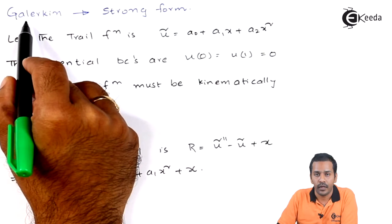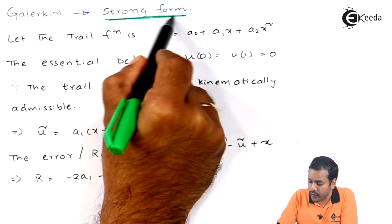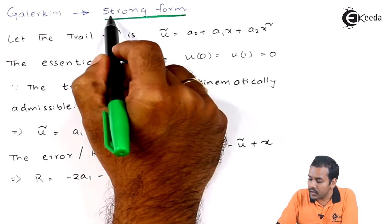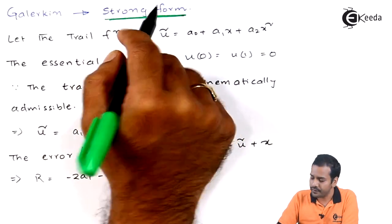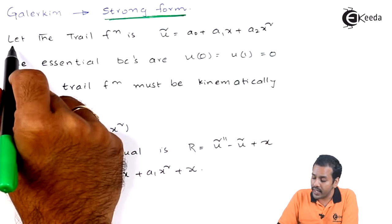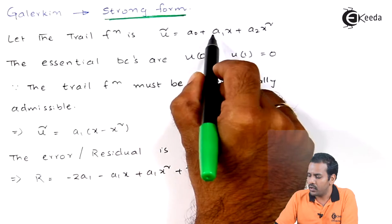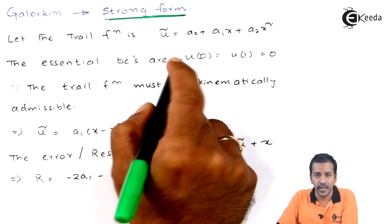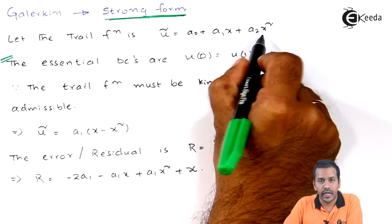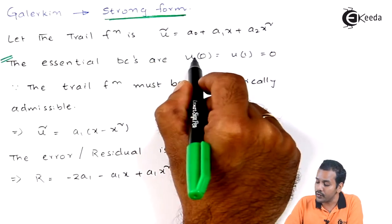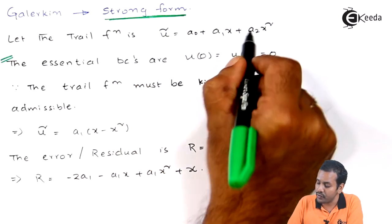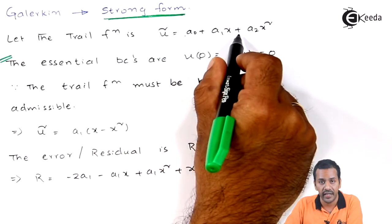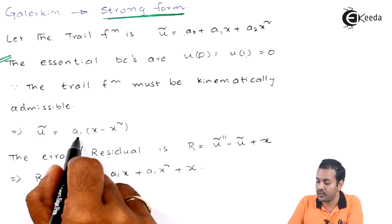Now let us start the Galerkin approach in strong form — we did not weaken the differential equation at all. The trial function is u_tilde = A0 + A1*x + A2*x^2, a quadratic polynomial. It must satisfy the essential boundary conditions. Substituting u(0) = 0 gives A0 = 0, and u(1) = 0 gives A1 + A2 = 0, so A2 = -A1. Taking A1 as common, the trial solution becomes u_tilde = A1*(x - x^2), which is kinematically admissible.